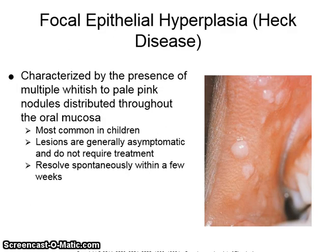Focal epithelial hyperplasia, also known as Heck's disease, is characterized by the presence of multiple whitish to pale pink nodules distributed throughout the oral mucosa. They are most common in children. The lesions are generally asymptomatic and do not require treatment, and can resolve spontaneously within a few weeks.